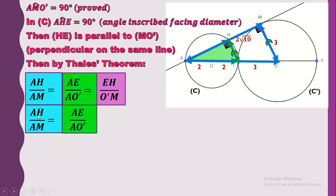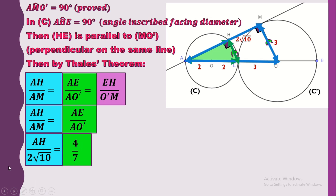We can write AH over AM equals AE over AO prime, and replacing each side by its length: moving 2√10 to the other side, AH equals 2√10 times 4 divided by 7, which gives us AH equals 8√10 over 7.